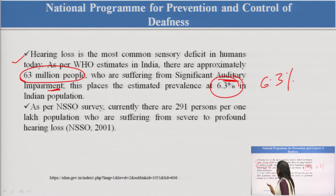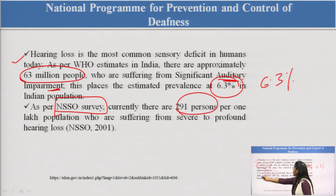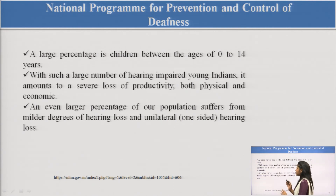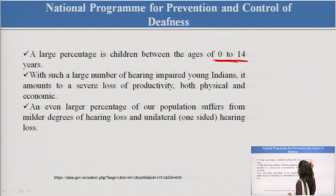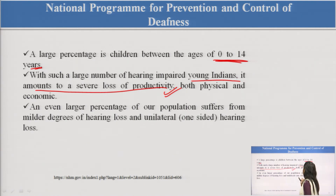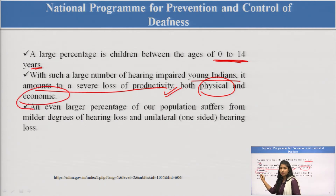As per the NSSO survey, there are currently 291 persons per one lakh population suffering from severe to profound hearing loss. Therefore we need a program for controlling and preventing deafness. Looking at the demography, the age group of 0 to 14 years is more prone to deafness or hearing impairment. With such a large number of hearing-impaired young Indians, this amounts to a severe loss of productivity. It impairs quality of life both physically and economically and creates a burden on the state and country.